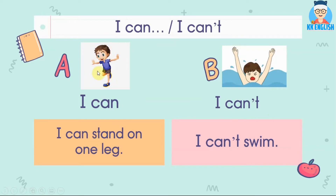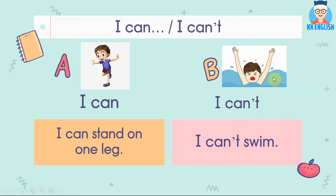你看这个图片。Look at the picture: I can stand on one leg. 我可以用一条腿来站立。I can't swim — 我不能游泳，我不可以游泳。